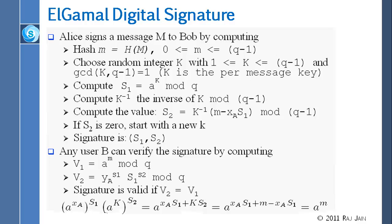The reason this happens is because S1 has a particular value, a raised to K mod Q. Even though you don't know K, you can raise it to the power S2 and you can raise YA to the power S1. So by doing that, the mathematics works out that they are equal to a raised to M.